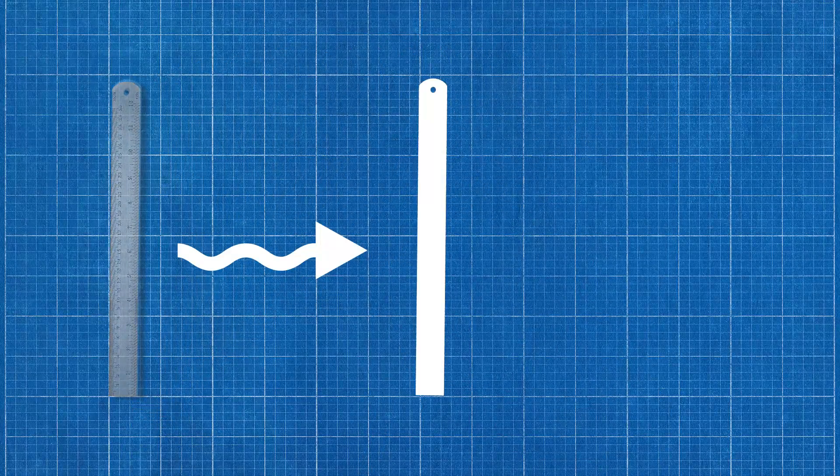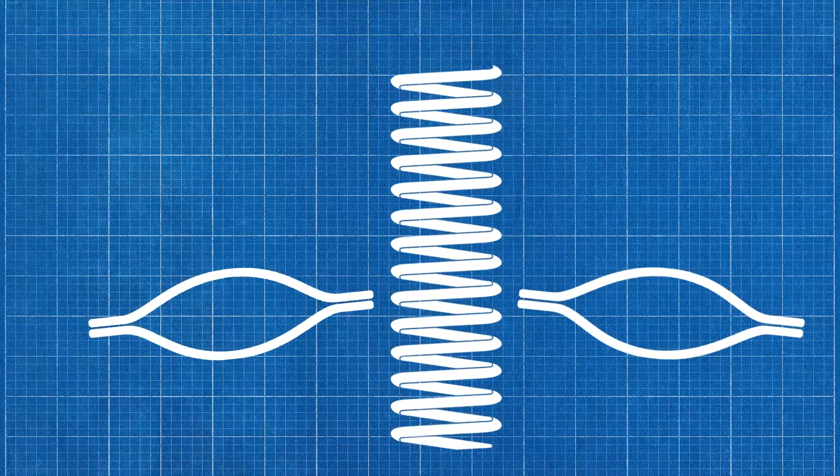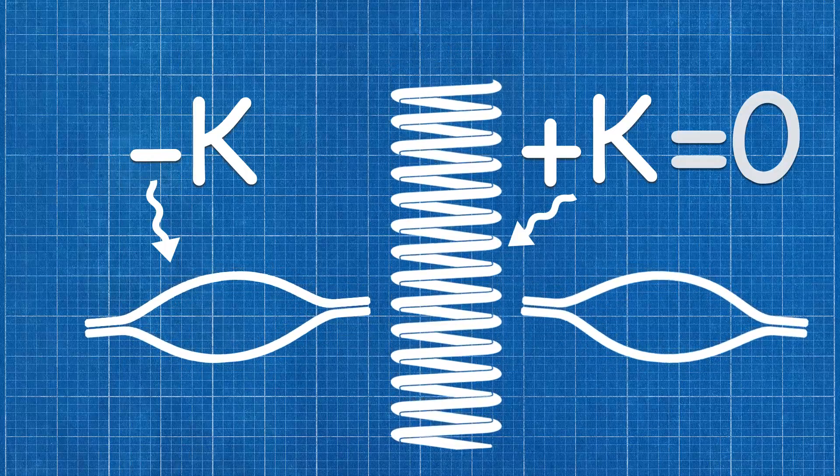Now when you put one of these negative stiffness systems in parallel with a traditional positive stiffness system, those stiffnesses add, and if you can get them just right, they can add to zero.